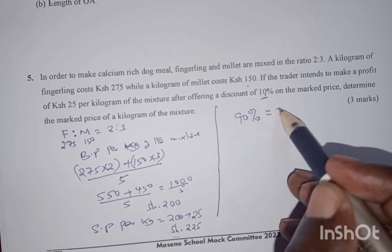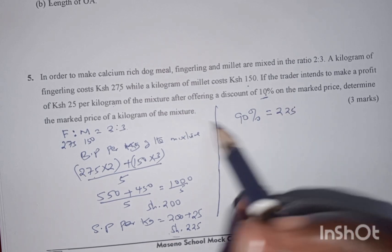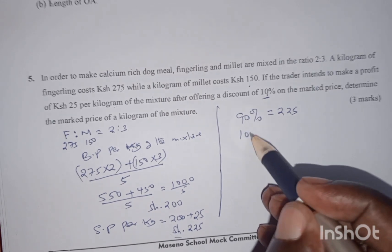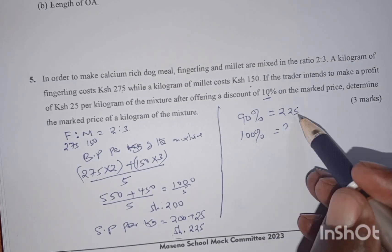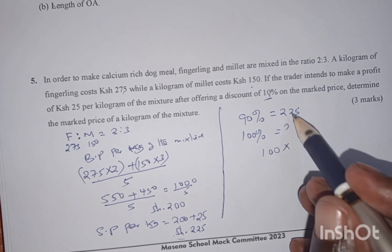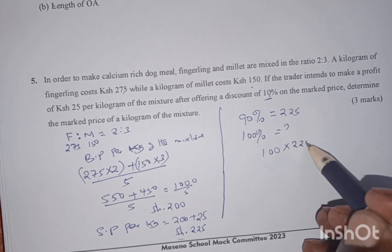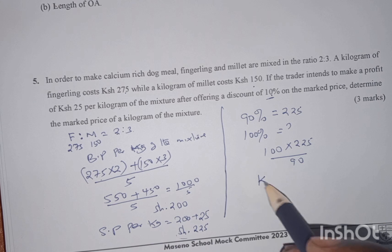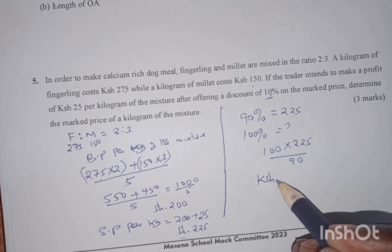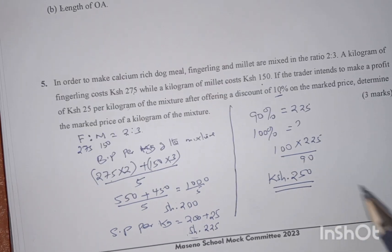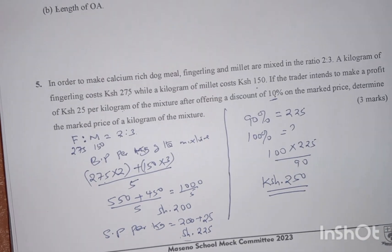What we have costs 90%, so we are supposed to determine the market price. Remember the market price is 100%. If 90% gives us 225, 100% is going to give us 100 multiplied by 225 divided by 90, and this gives us an amount equivalent to 250 shillings as the answer to this particular question.